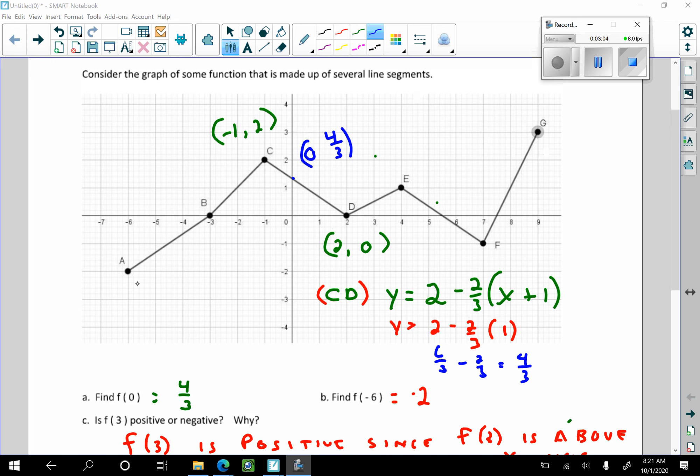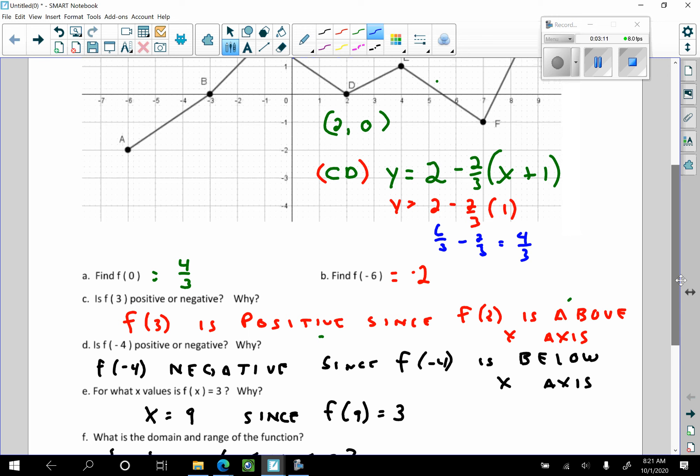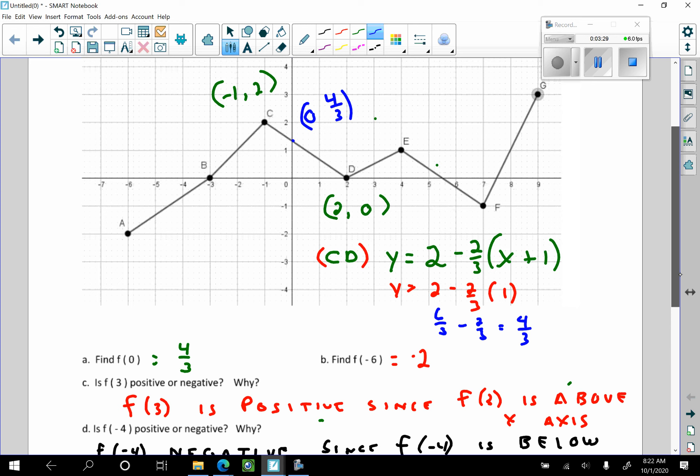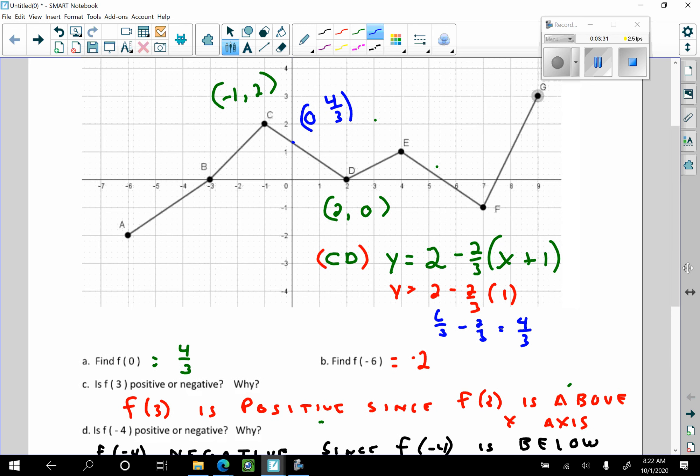f of negative 6 is easy. It's that point right there, going to be negative 2. This particular question is testable as well. f of 3, is f of 3 positive or negative? They did not tell you to find f of 3. They just want to know, is f of 3 positive or negative? And there's a reason why we're doing that, and that's to prepare you for calculus.